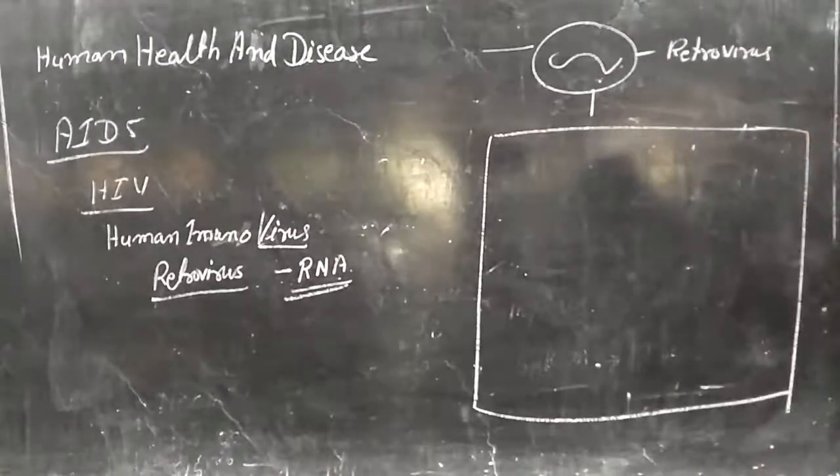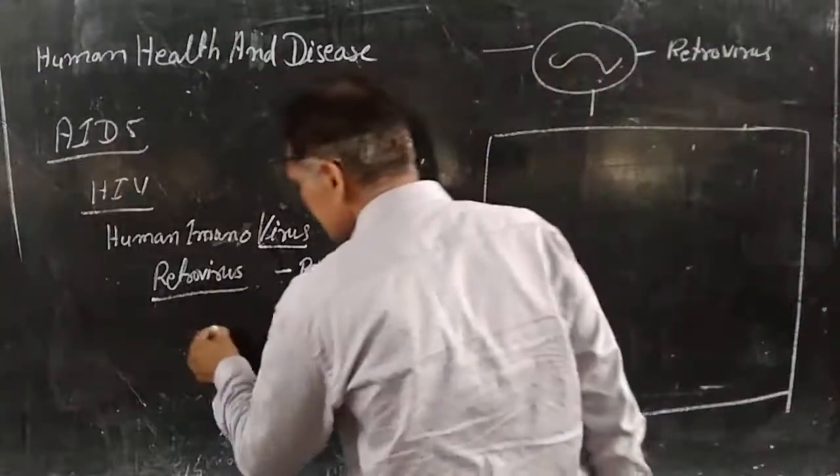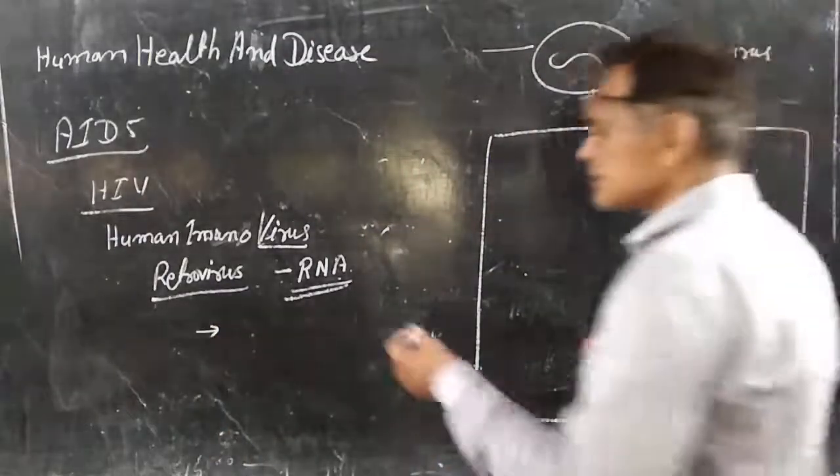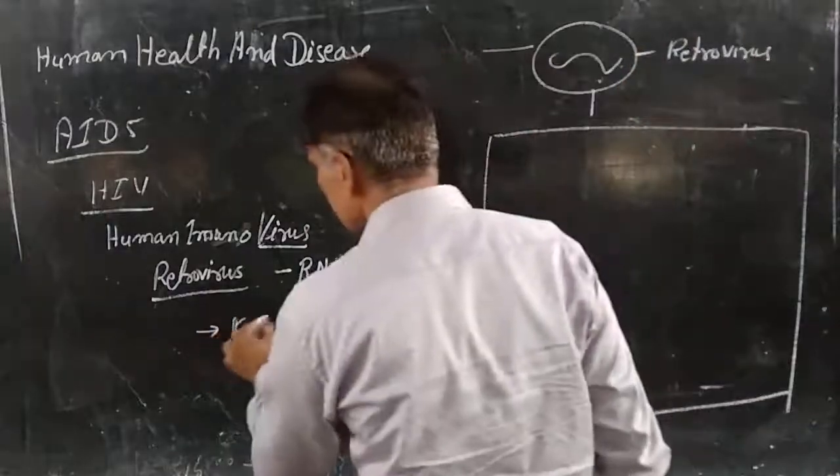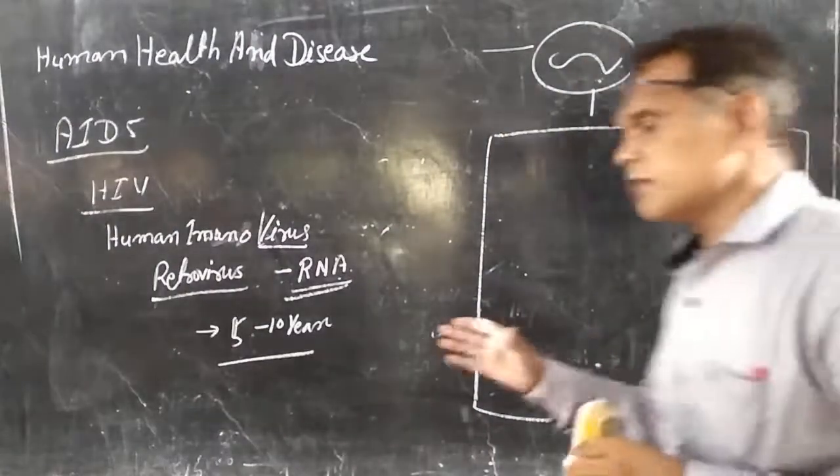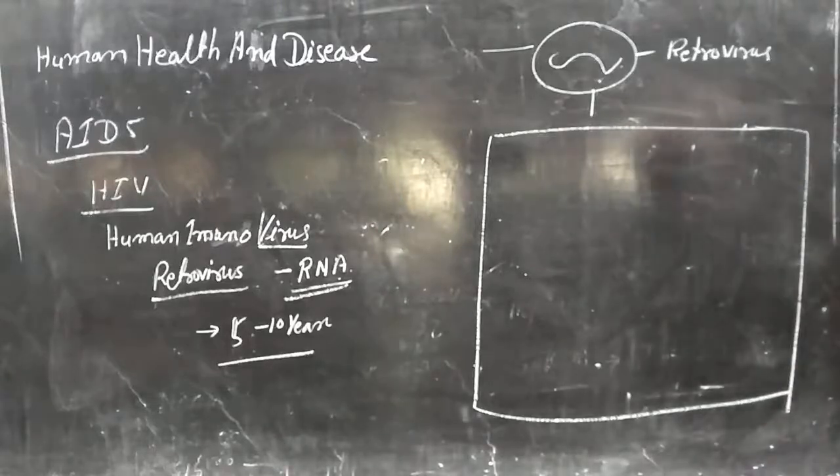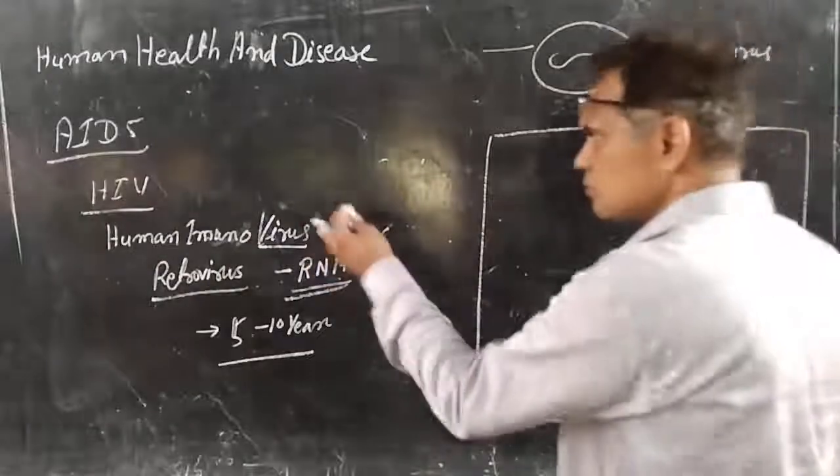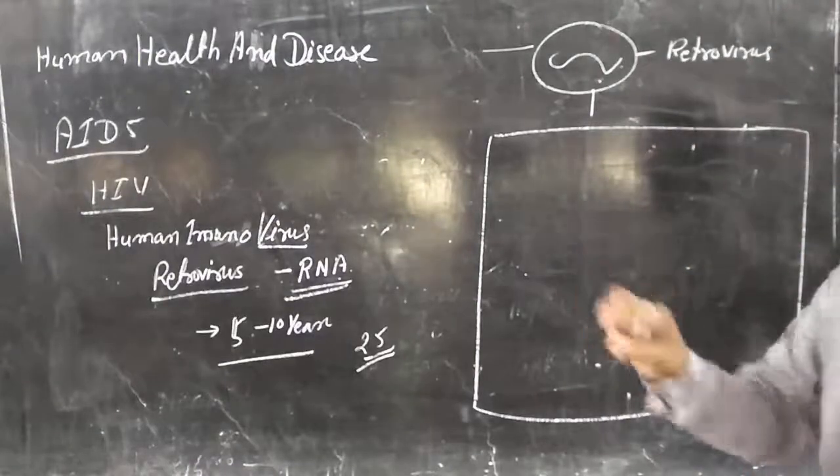This disease was first time investigated in the 19th century. Whenever it is transferred into the human body, its symptoms will be diagnosed after some months to 5 to 10 years. In the last few years, due to AIDS, 25 million people died because there is no cure for this disease present till now.